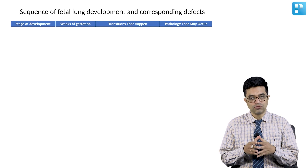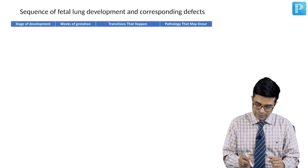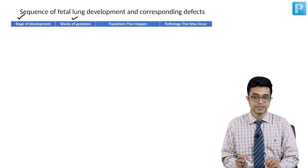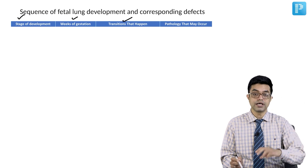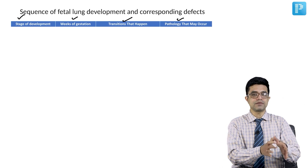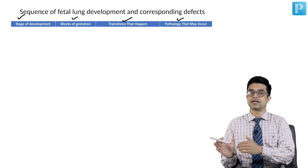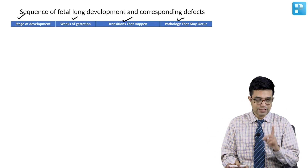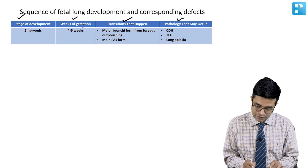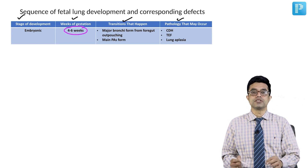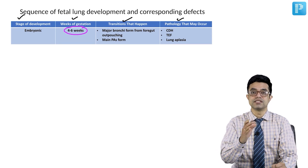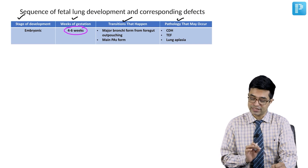The table is divided into four parts: stage of development, weeks of gestation, what transitions are happening, and pathology if development is interrupted. The first stage is the embryonic stage, occurring between four to six weeks of gestation. If an MCQ asks at what stage lung development begins, the answer is four to six weeks.